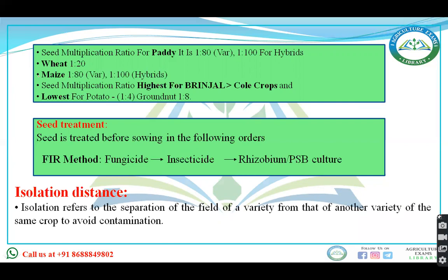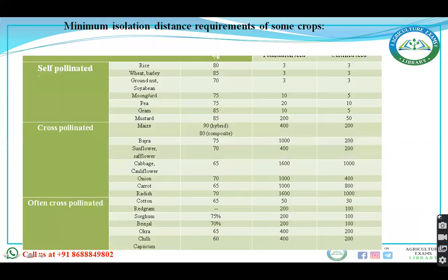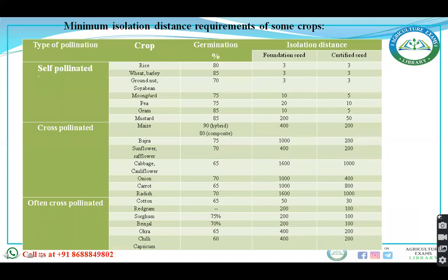Isolation distance is the separation of the field of one variety from another variety of the same crop, to avoid contamination. Questions are asked about germination percentage and isolation distance for foundation seed and certified seed. For wheat (a self-pollinated crop), germination percentage is 85%. Isolation distance for foundation seed is 3 meters, and for certified seed it is also 3 meters. More data is available on the Telegram channel.